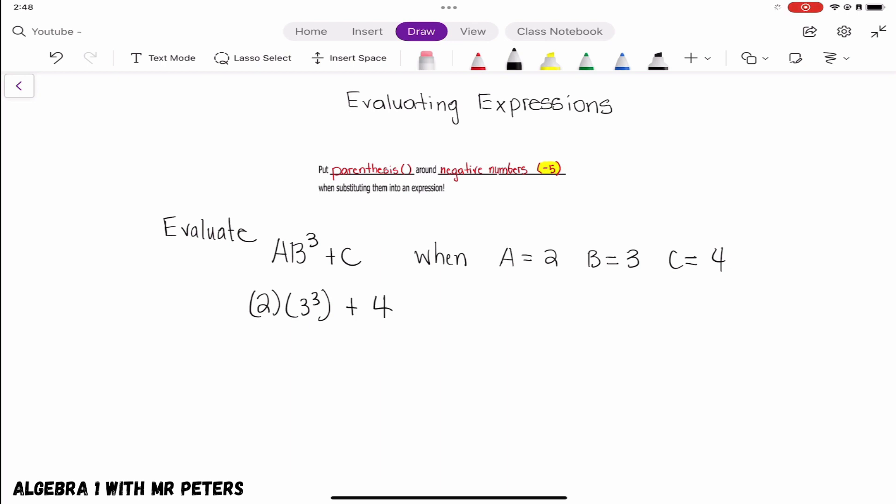So now what they're asking us to do guys, they want us to take 3, multiply it by itself three times. So that means 3 times 3 times 3. And once we do that, we're going to multiply that answer by 2 and then add 4, because remember guys, we're following the rules of order of operations.